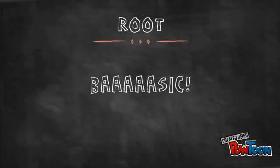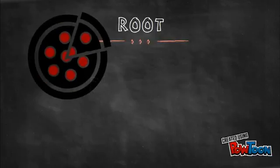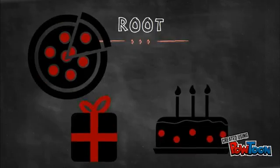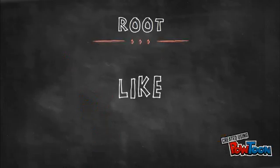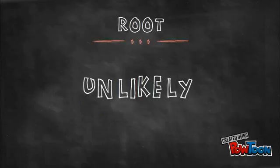First of all, the root is the most basic type of word there is. For example, pizza, cake, gifts, clout. The root helps us to create other words. If we take a root word and add a prefix or a suffix, we get our second type of word, which is the derived.